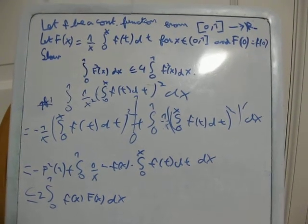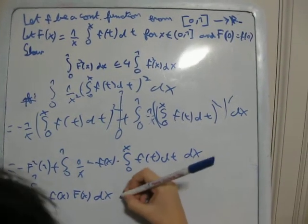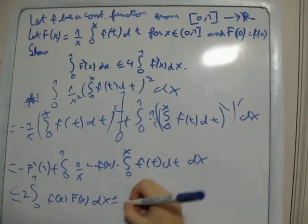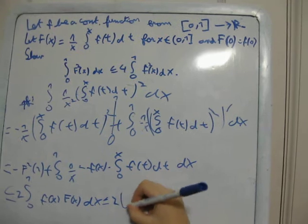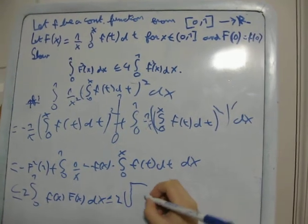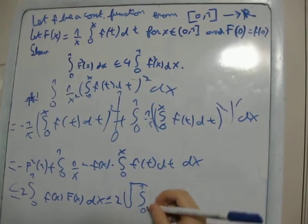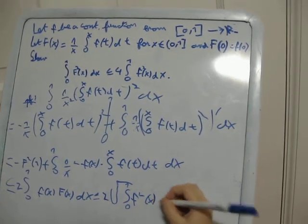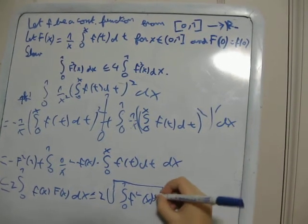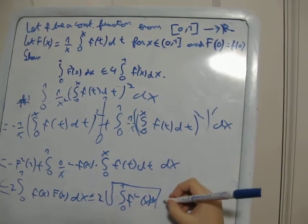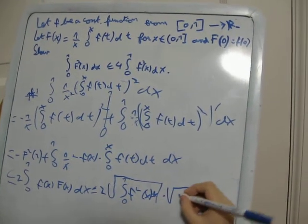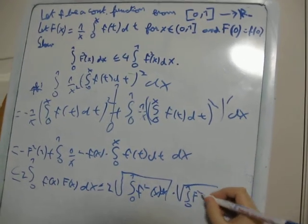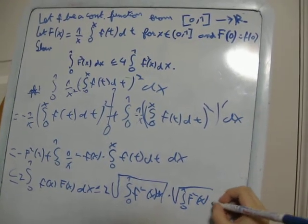But let's see here, we could apply Cauchy-Schwarz. And we would have 2 times the square root of the integral from 0 to 1 of f squared of x dx, times the square root of the integral from 0 to 1 of big F squared of x dx.